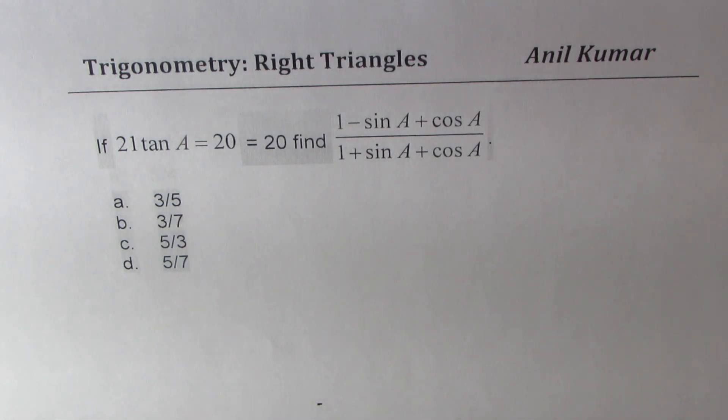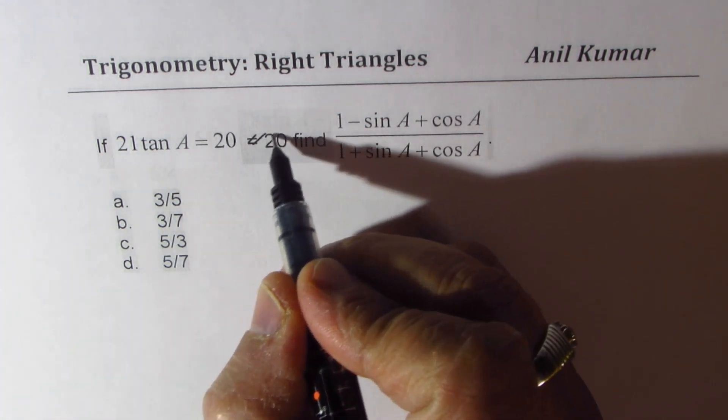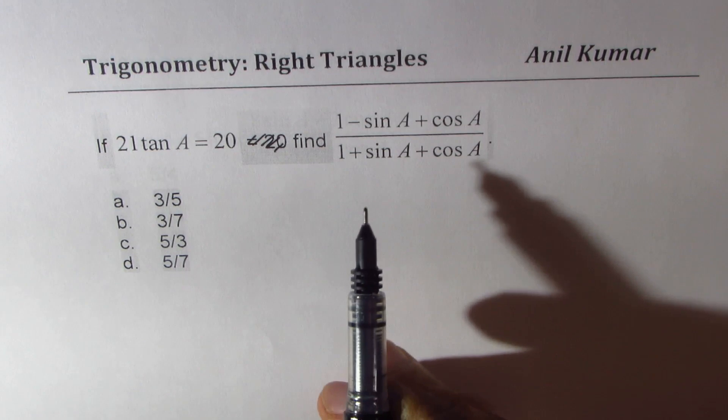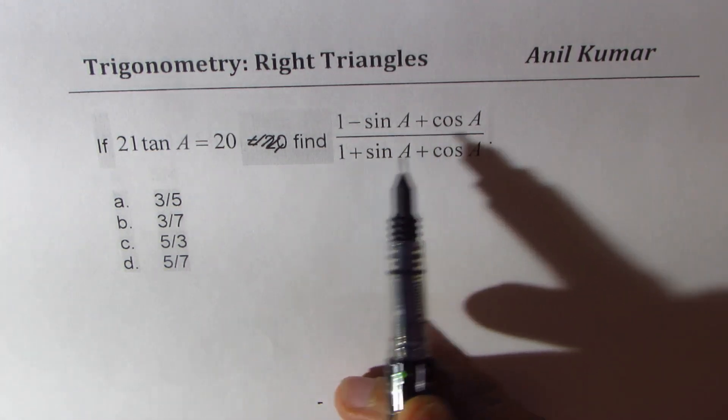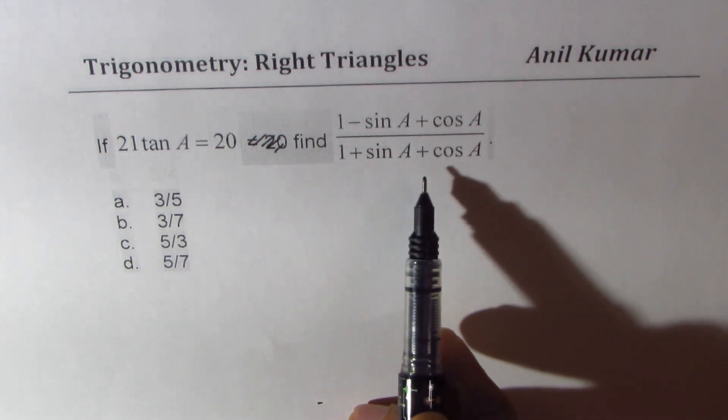I'm Anil Kumar sharing with you two multiple choice questions based on trigonometric ratios. If 21 tan A equals 20, find (1 - sin A + cos A) divided by (1 + sin A + cos A).